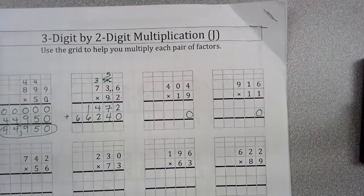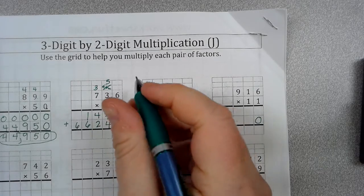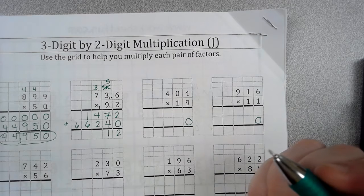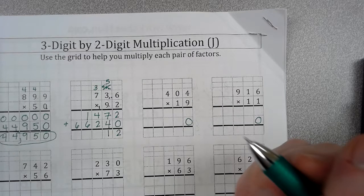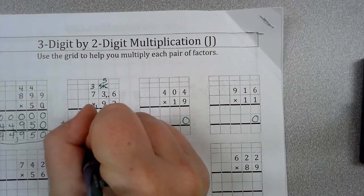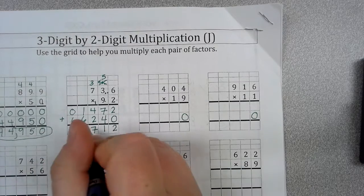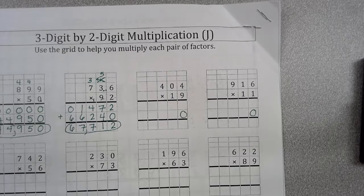So, now all we have to do is add 2 plus 0 is 2. 7 plus 4 is 11. Carry that. Carry my 1 over. 4 plus 2 is 6 plus 6 plus 1 is 7. 6 plus 1 is 7. 6 plus 0 is 6.